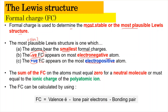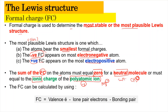It is important to note that the sum of the formal charges of all atoms must equal zero for a neutral molecule. For a polyatomic ion, it needs to equal the ionic charge it carries — for example, O3 minus would require a sum of negative one. The formal charge of each atom is calculated as: valence electrons minus lone pair electrons minus bonding pairs.